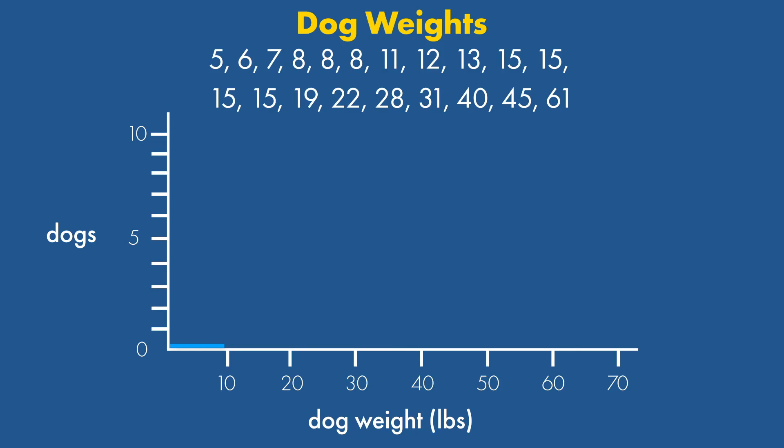The first bin is 0 to 10 pounds. There is a 5-pound dog, a 6-pound dog, 7-pound dog, and 3 8-pound dogs for a total of 6 dogs in the 0 to 10-pound range. So, the first bar for 0 to 10 pounds has a height of 6.